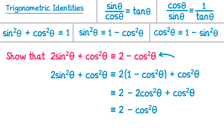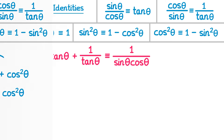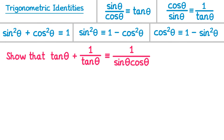We've now finished that example — we started with the left hand side and ended up with the right hand side. Now let's try the next question: show that tan theta plus 1 over tan theta is identically equal to 1 over sine theta cos theta. The left hand side has tans but the right hand side doesn't, so we'll need to remove all the tans using the top two identities.